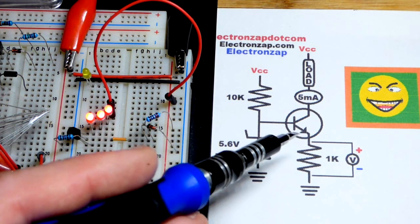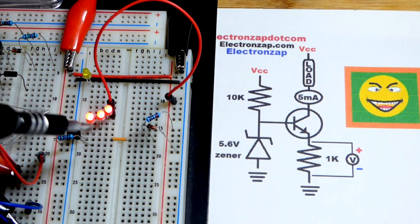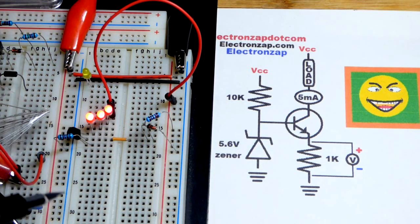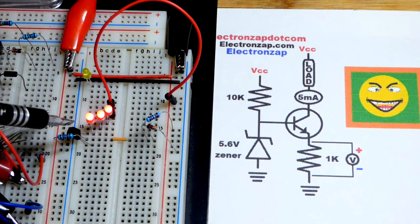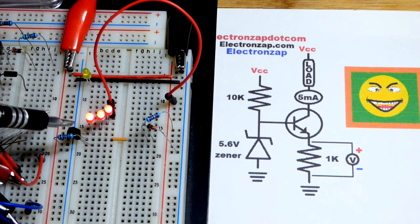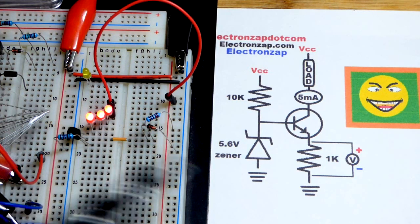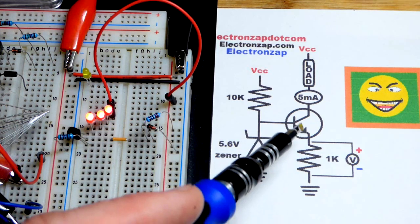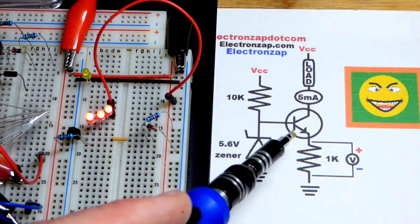That's part of an NPN bipolar junction transistor. I'm using the 2N2222, and if you're using an NPN bipolar junction that starts with 2N, it's probably the same pin layout. But in any case, any NPN bipolar junction transistor should work. Pin layout may be different though.